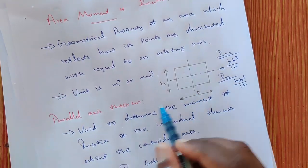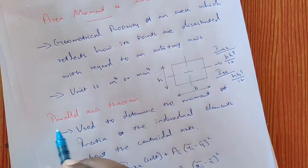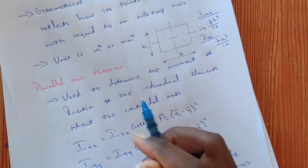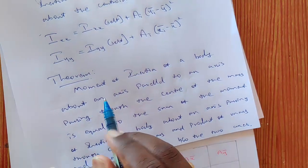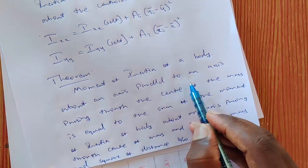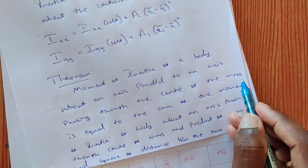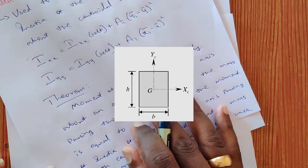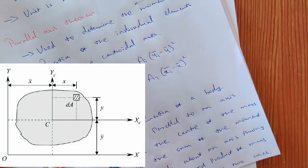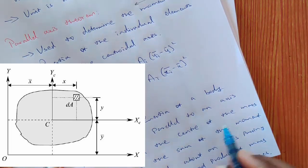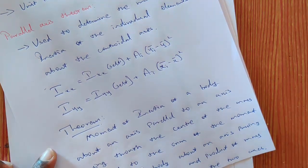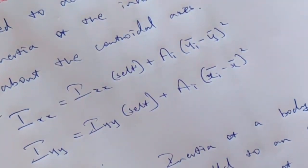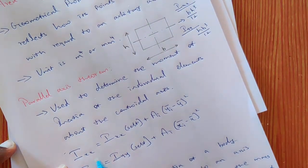To solve any problem in moment of inertia, we must understand the parallel axis theorem. This theorem states that the moment of inertia of a body about an axis parallel to an axis passing through the centroidal axis — but if the axis is not passing through the centroidal axis, then we have to use this parallel axis theorem. The moment of inertia will be the sum of the moment of inertia about the centroidal axis plus the product of area and the square of the distance between the two axes. This gives us the equation for Ixx and Iyy using the parallel axis theorem.